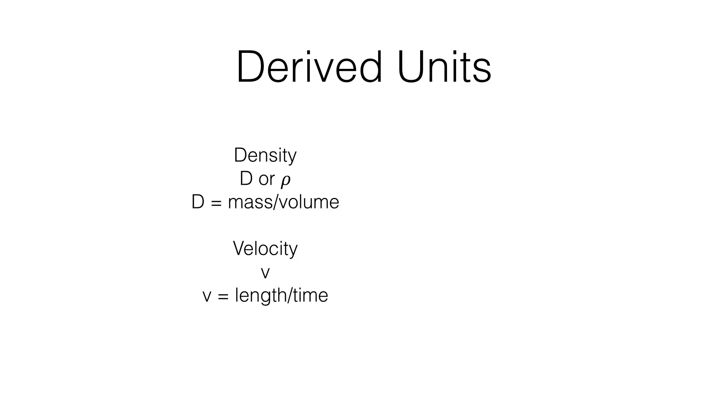Also, volume is a derived unit which comes from length cubed. And one important relationship is that one centimeter cubed is equivalent to one milliliter. The joule, which is a unit of energy, is equivalent to kilograms times meters squared over seconds squared.